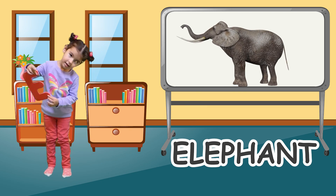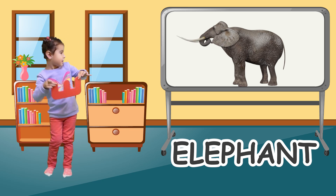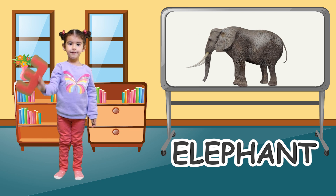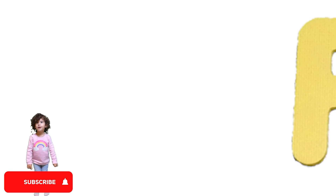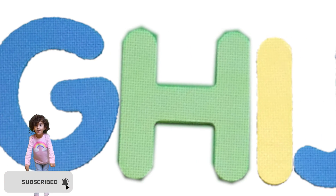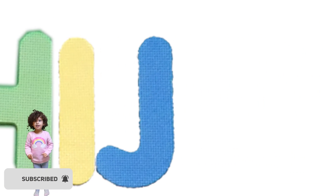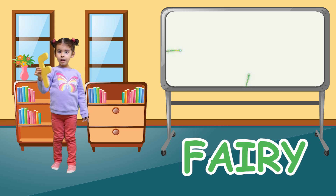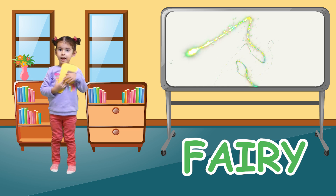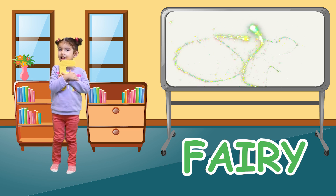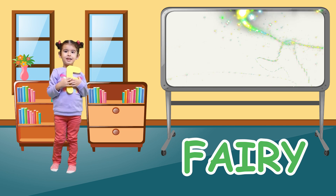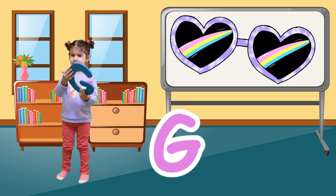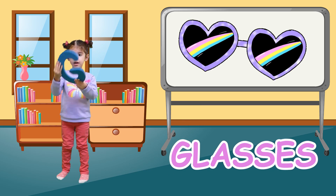E is for elephant. E, elephant, E, elephant, E, elephant. F is for fairy. F, fairy, F, fairy.